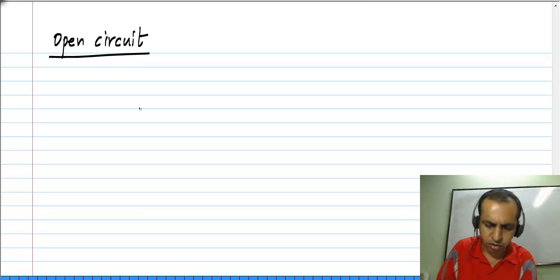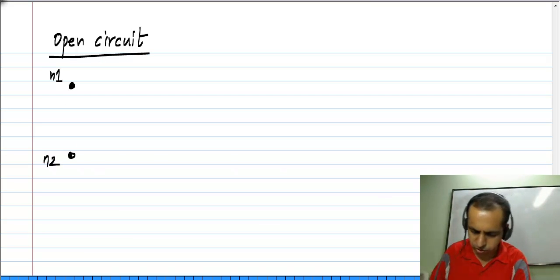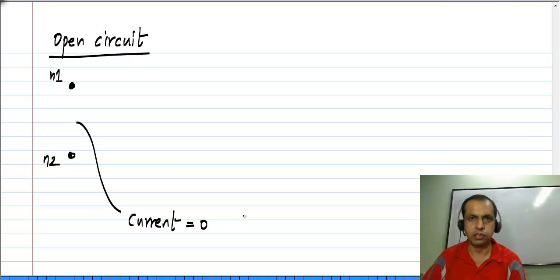A similar concept is an open circuit. Open circuit really means that there is no connection between these two nodes. An open circuit means no current flows between these two nodes. In other words, current equals 0.